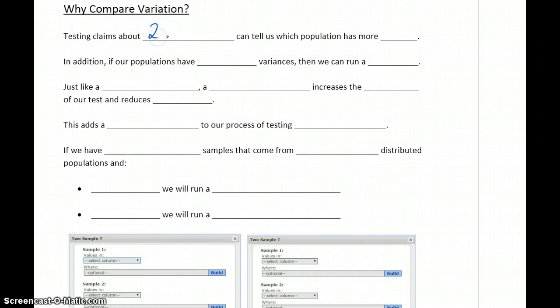Testing claims about two variances can tell us which population has more spread.